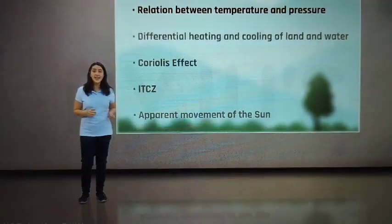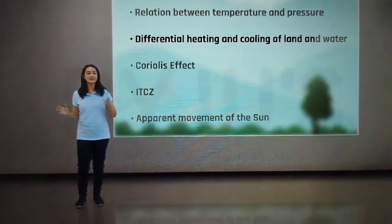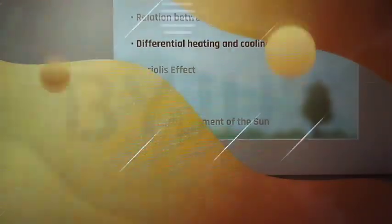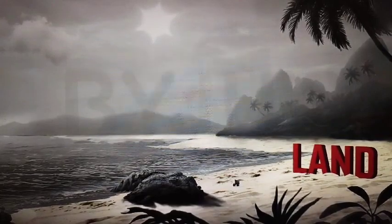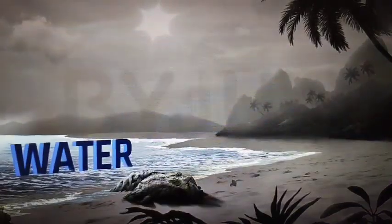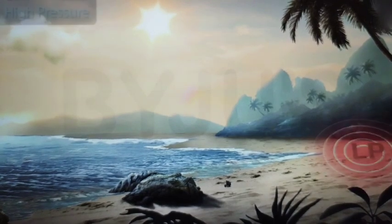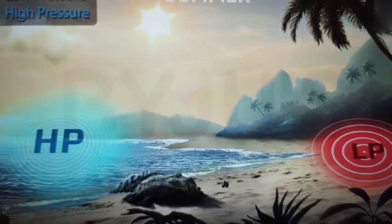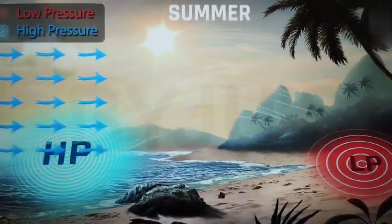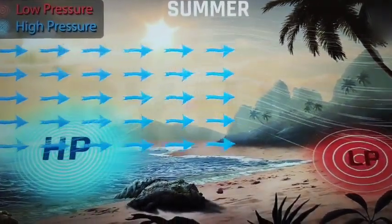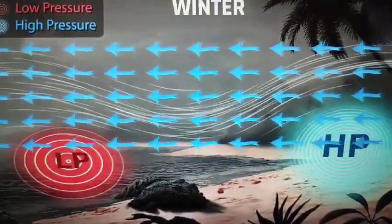The second concept is the differential heating and cooling of land and water. Land heats up and cools down faster compared to water. During summer, low pressure develops over land and high pressure develops over the sea. So the direction of the wind will be from the sea to the land. And the opposite will happen during winters.